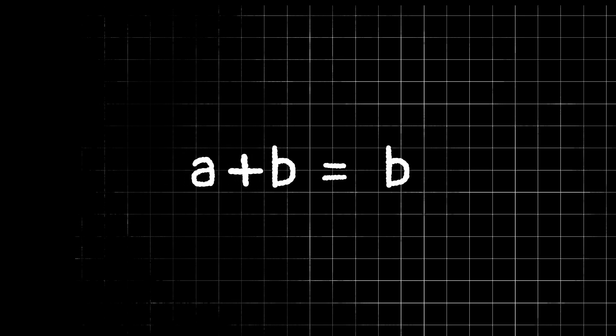But remember, a equals b, right? a has the same value as b, so we could rewrite a plus b as b plus b, and it would have the same value. Or in other words, we have 2b equals b.